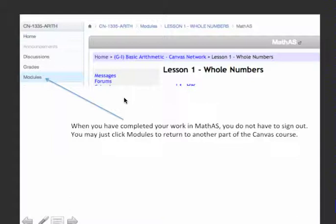When you're finished in MathAS and you're ready to go back into Canvas, you're still going to be in the Canvas wraparound even when the MathAS window appears. So just click modules to go back into Canvas and then continue on there at the point where you left off.